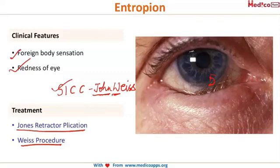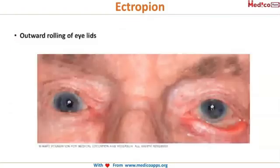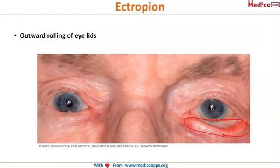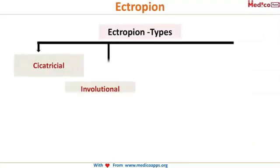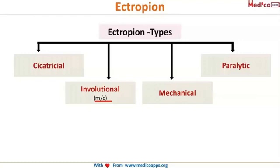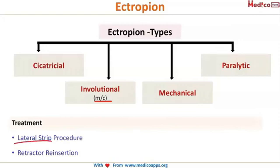Now ectropion is the outward rolling of the eyelids, as seen in the picture. It is divided into four types: cicatricial, involutional (most common), mechanical, and paralytic. The surgeries used are the lateral strip procedure and retractor reinsertion — there is no Jones or Weiss procedure here. These surgeries manage ectropion.